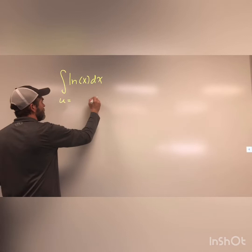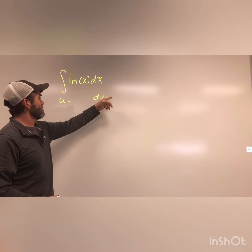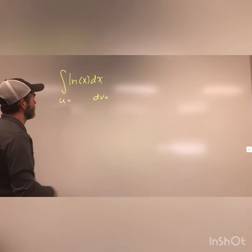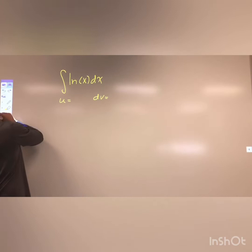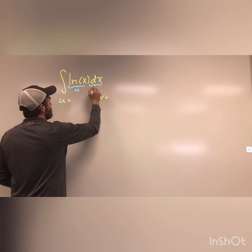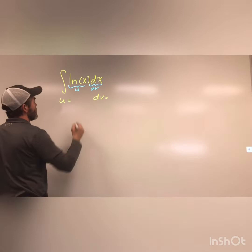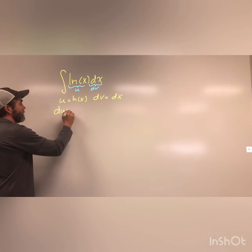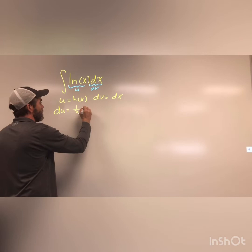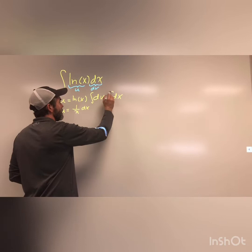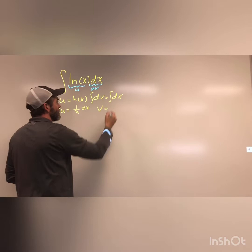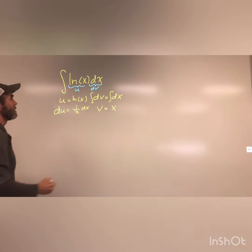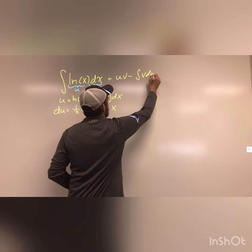I'm going to solve this using integration by parts. We want to call something u and something dv. It wouldn't make much sense to call the natural log of x dv, because this problem is going to teach you how to anti-differentiate the natural log of x — you don't know how to do that yet. So let's make natural log u, and we'll make dx equal to dv. So u equals the natural log of x, and dv equals dx. Taking the derivative gives du equals 1 over x dx. Anti-differentiating both sides: the anti-derivative of dv is v, and the anti-derivative of dx is x.